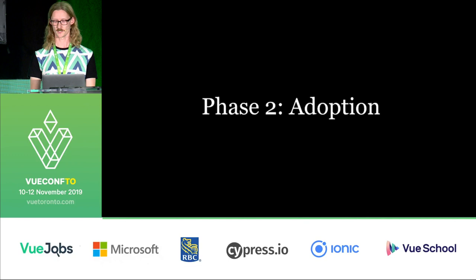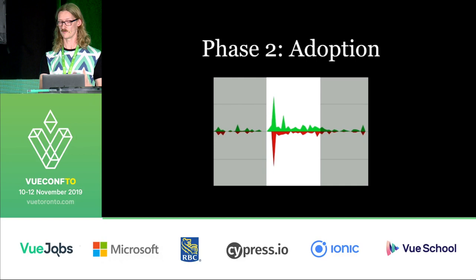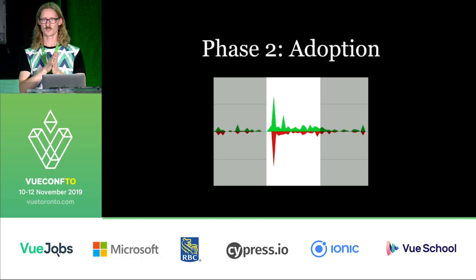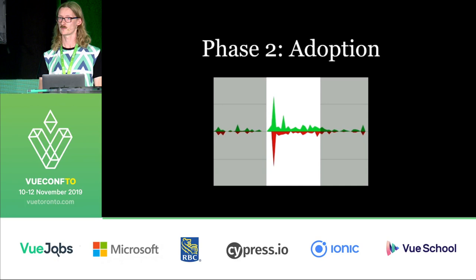The second phase that we came to was the phase of Adoption. This big spike actually happened at the beginning of 2019. To give more context into why: we started off this big project to completely rewrite our front end from jQuery and Bootstrap into Vue. And that big spike is when we got a whole ton of developers on this project all at once.